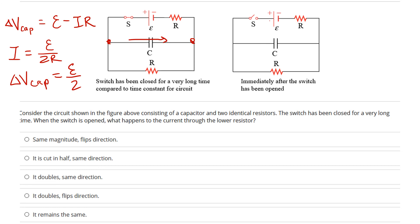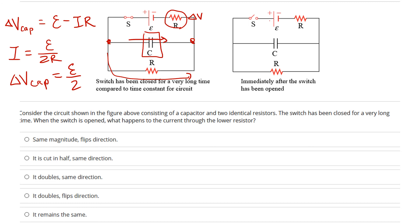This is different from what usually happens when there's no resistor in parallel, where the capacitor would charge up to ε and the charge would be C·ε. But in this case, because there's a resistor in parallel, the capacitor isn't the only path for current to flow. Even after the capacitor is fully charged, there's still current flowing that way. That means there's still a voltage drop across the resistor, and if there's a voltage drop there, the voltage drop across the capacitor cannot be as large, because everything still has to add up to zero.